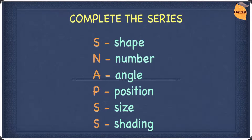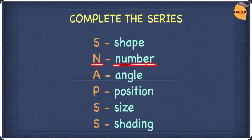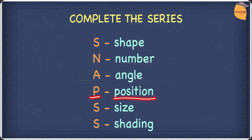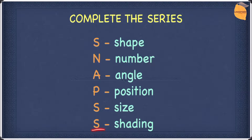Before we start the questions, let's first look at SNAPS. S stands for shape — are the shapes the same or different? N stands for number — how many of the same shapes are there? A stands for angle — at which angle is the shape rotated? P stands for position — how does the position of a shape change? S stands for size — does the size of a shape change? And finally, S stands for shading — does the shading pattern or the colour of a shape change?